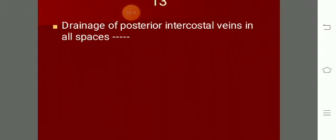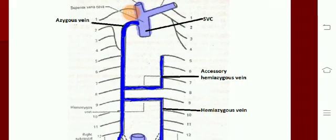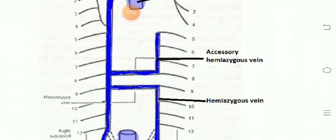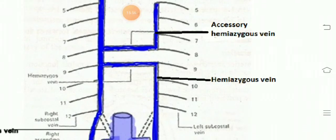Drainage of posterior intercostal veins: on the right side, the first vein drains into the right brachiocephalic vein; on the left side, into the left brachiocephalic vein. The second, third, and fourth join to form the right superior intercostal vein, which drains into the azygos vein on the right side, and on the left side into the left brachiocephalic vein. Below that, on the left side, spaces 5 to 8 drain into the accessory hemiazygos vein, and from 9 to 11 into the hemiazygos vein.